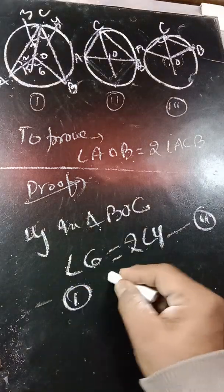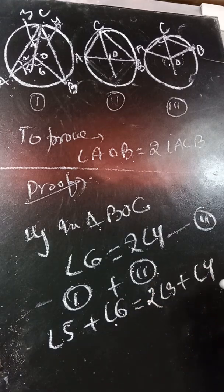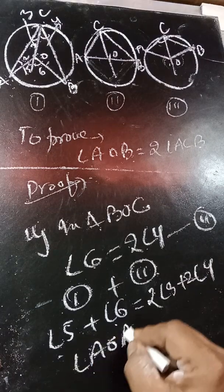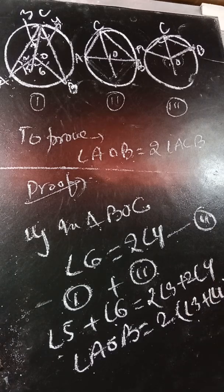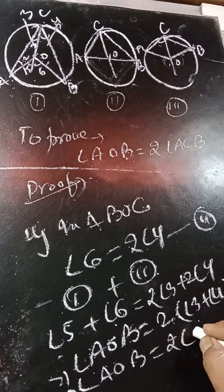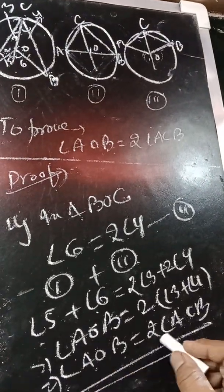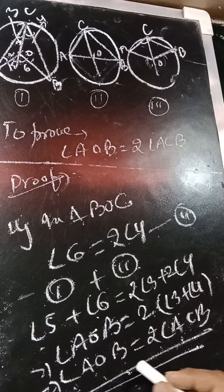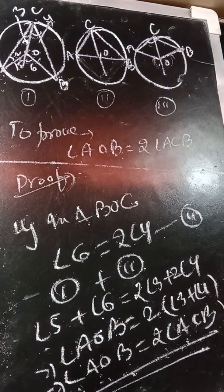Adding equation 1 and equation 2, we get angle 5 plus angle 6 equals twice of angle 3 plus twice of angle 4. Angle 5 plus angle 6 gives angle AOB, and taking 2 common gives angle AOB equals twice of angle 3 plus angle 4, which equals twice of angle ACB. This is what we had to prove. Only in the third case, reflex angle AOB equals twice of angle ACB. In this way, we can prove the theorem.